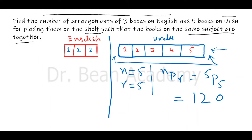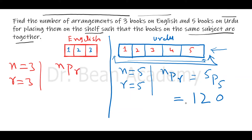Let me grab my calculator to see what 5P5 is — it's 120. So I can arrange these five Urdu books with 120 different arrangements. Now for English, n is equal to 3 and r is equal to 3, so 3P3, and the value of 3P3 is 6. So I can arrange them in only six different configurations.